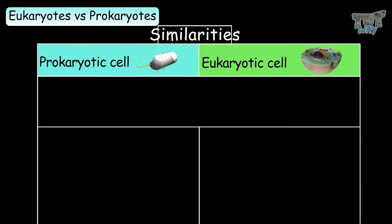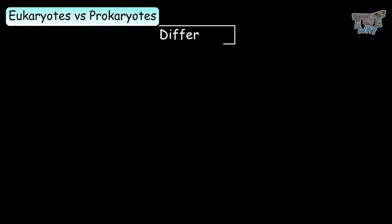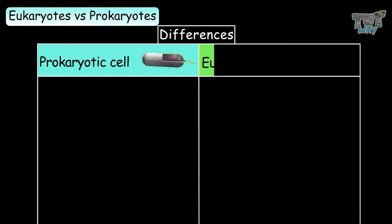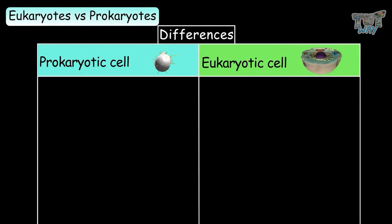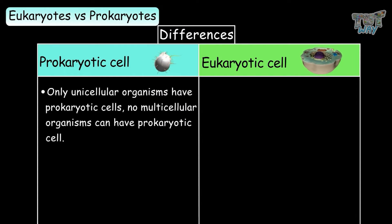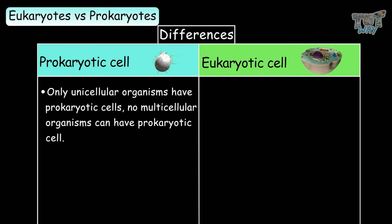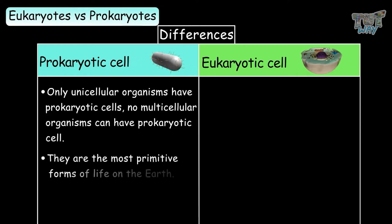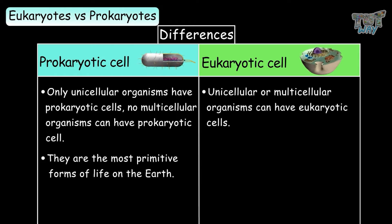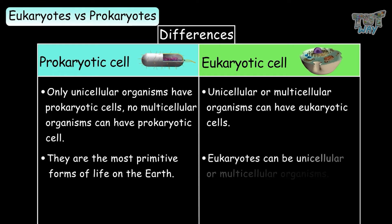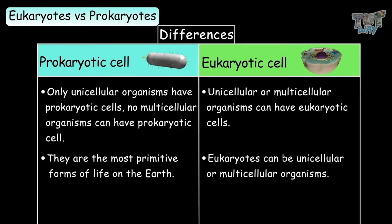Now we have learned about the similarities between the prokaryotic and eukaryotic cells. Now we will learn the differences. First of all, only unicellular organisms have prokaryotic cells — no multicellular organism can have prokaryotic cells. They are the most primitive form of life on Earth. Whereas unicellular or multicellular organisms can have eukaryotic cells.